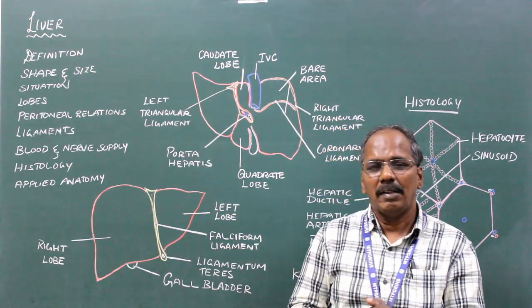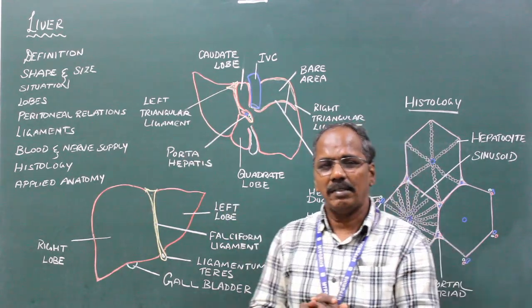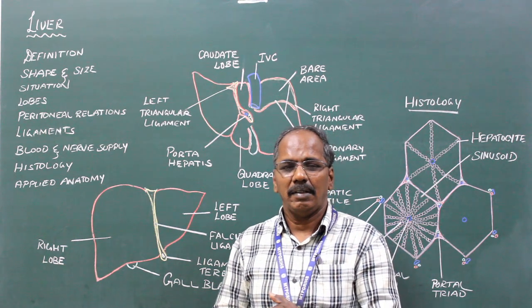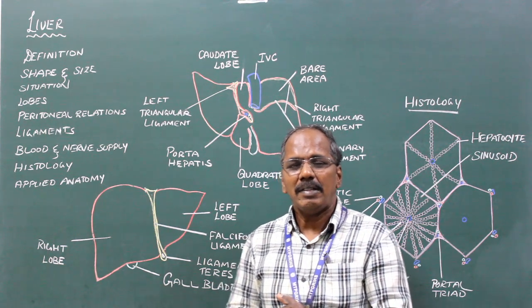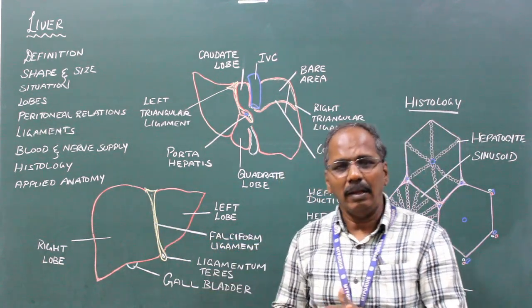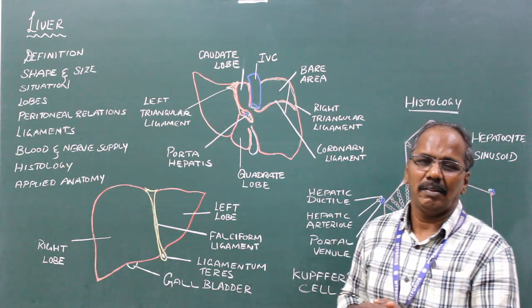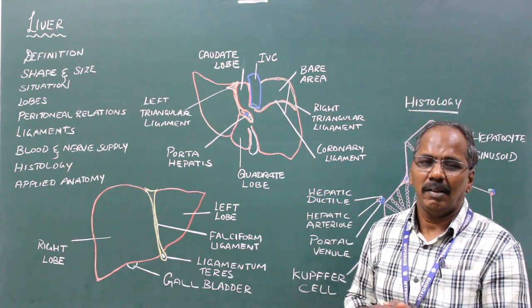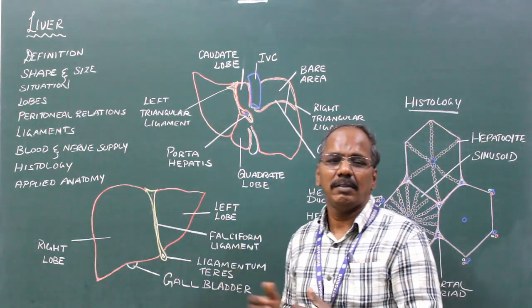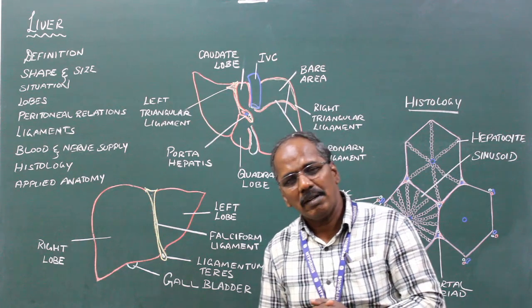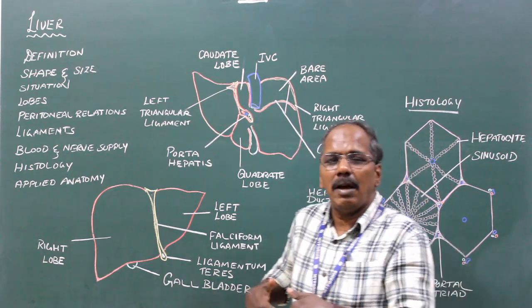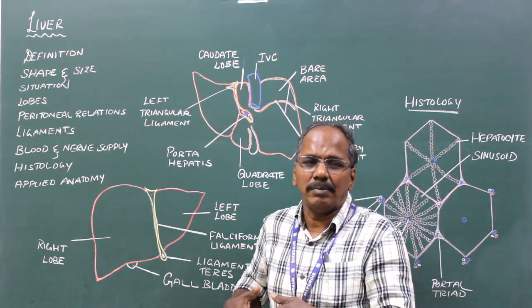Liver definition. It is the largest gland of the body, reddish brown in color, situated mainly in the right hypochondrium.